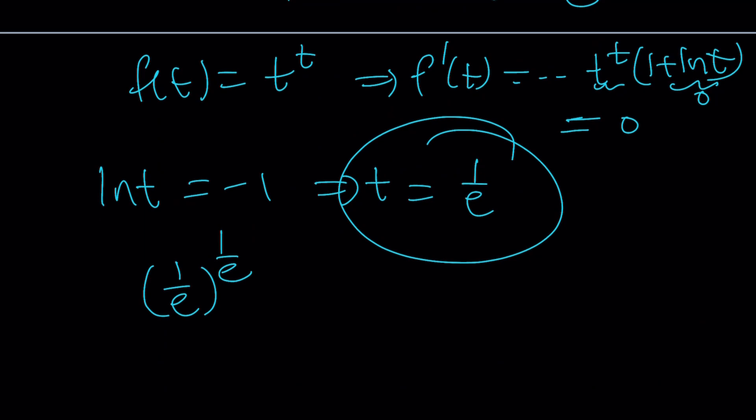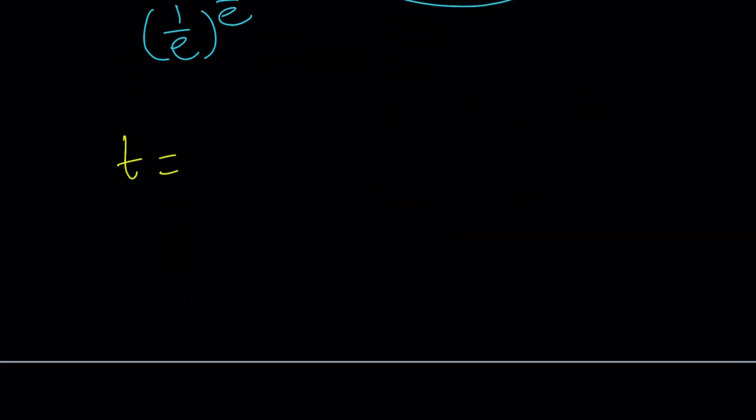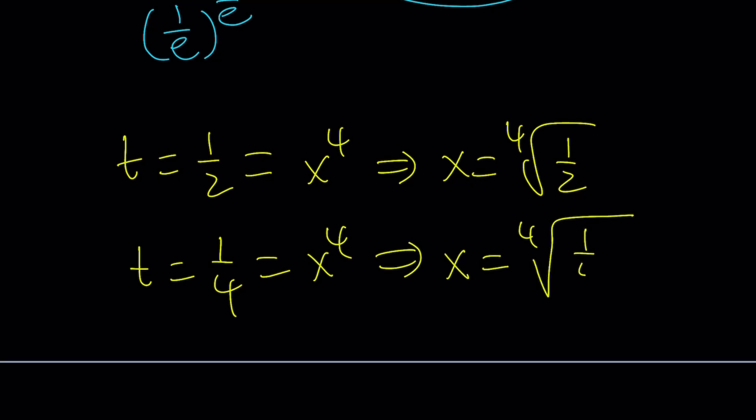Let's go ahead and check it out. If t is equal to 1 half, what is x? We're supposed to find x. And what is t? t was x to the 4th power. And from here, we get x equals the 4th root of 1 half. Well, x cannot be negative for obvious reasons. And if t is equal to 1 fourth and that equals x to the 4th power, from here, x becomes the 4th root of 1 fourth, which can also be written as the square root of 1 half. There are two solutions. Those are going to be the x values. Negatives don't work.